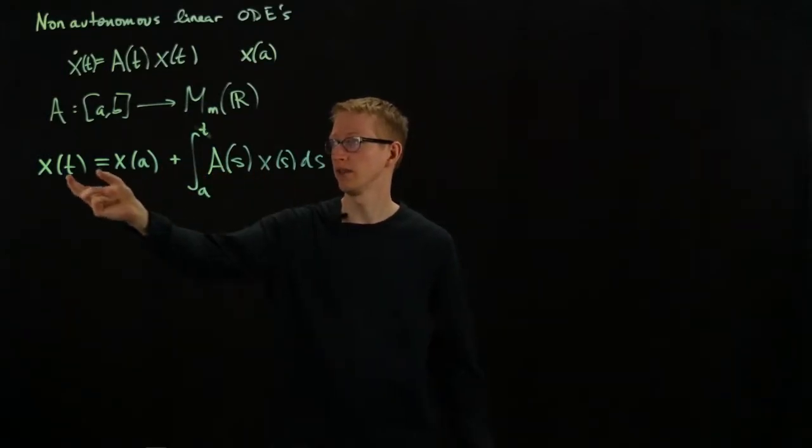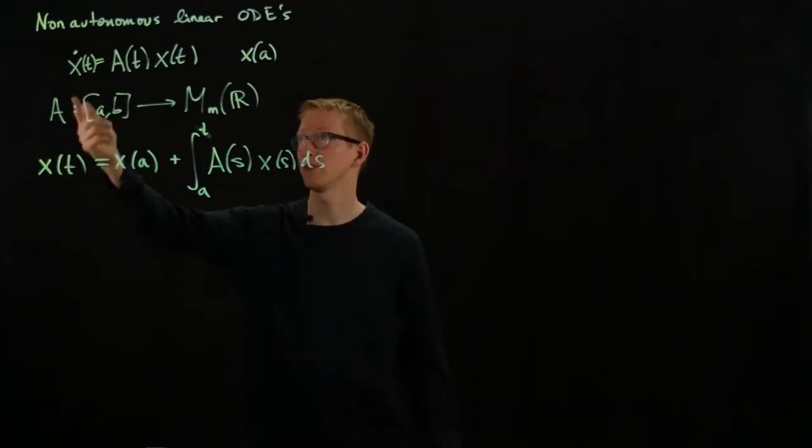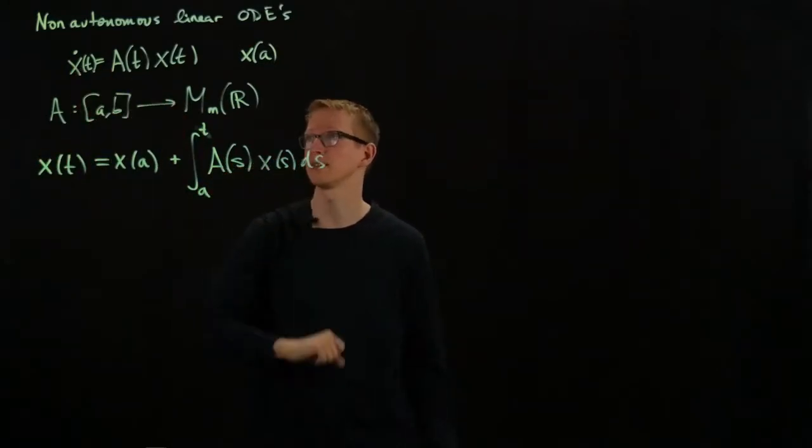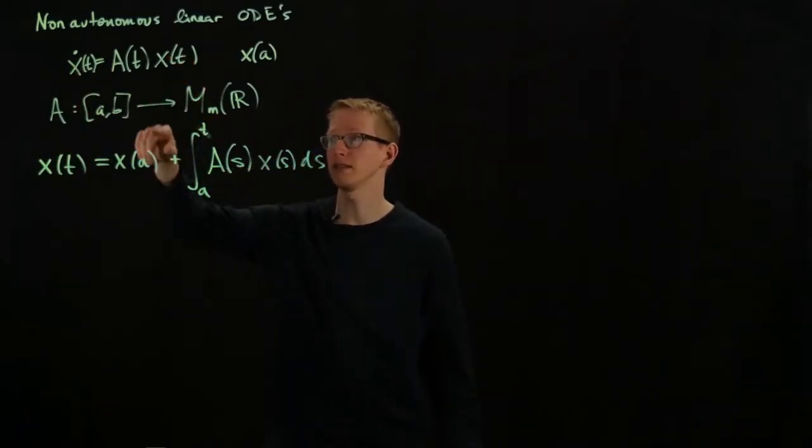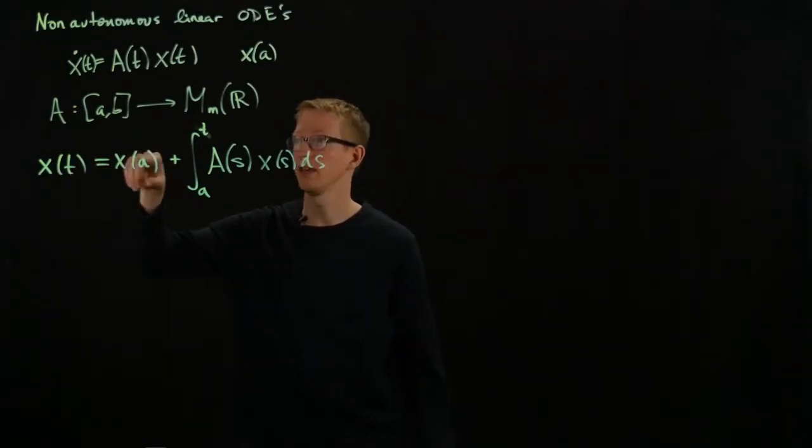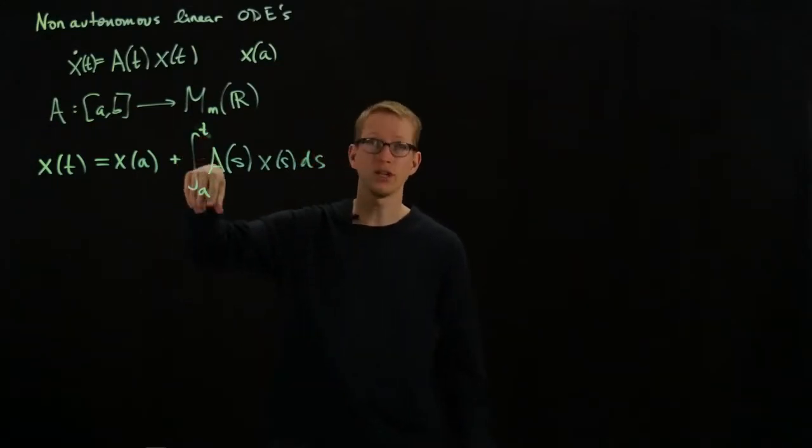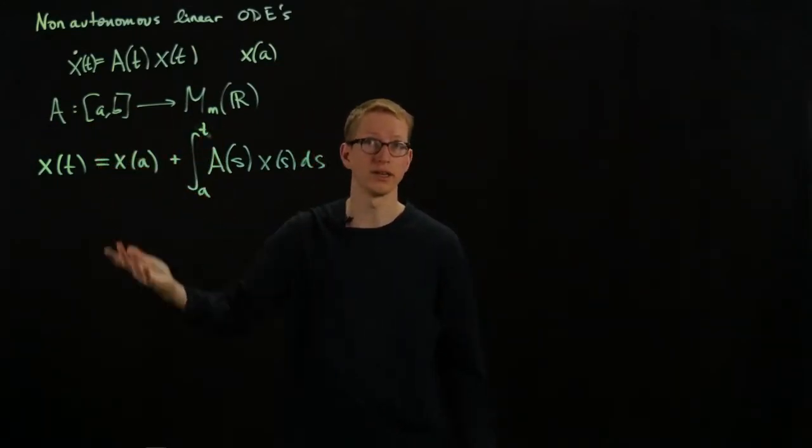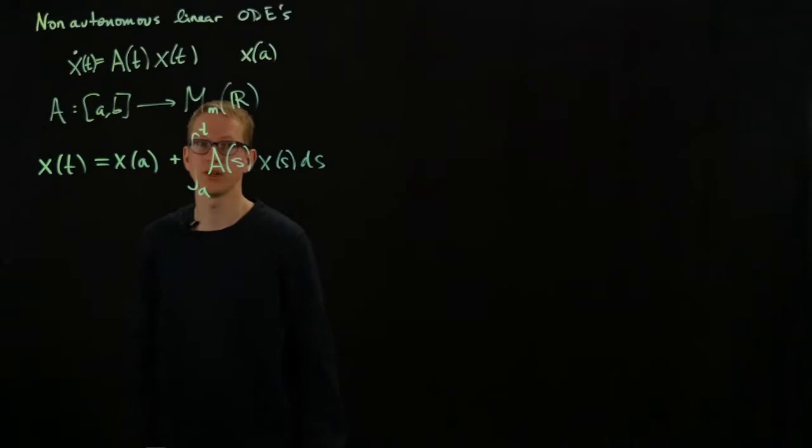The derivative of x of t equals a(t) x(t). So it gives me exactly this, and our initial condition is that x of t equals a gives me exactly this because this term is 0 since we're integrating over a single point, and that has no area, so its Riemann integral is 0.